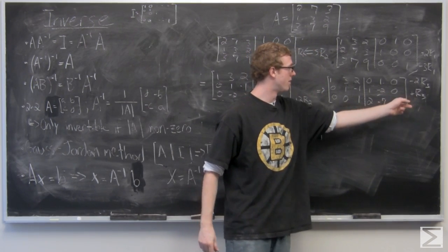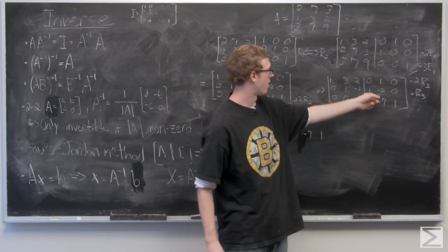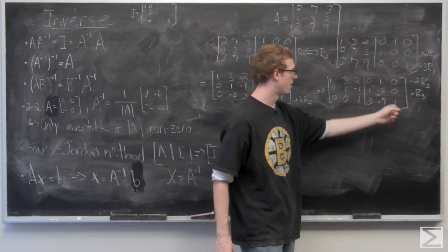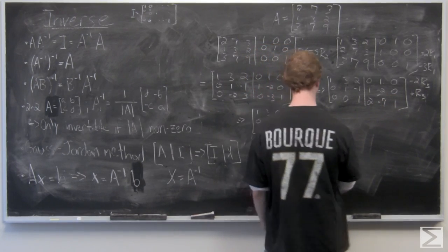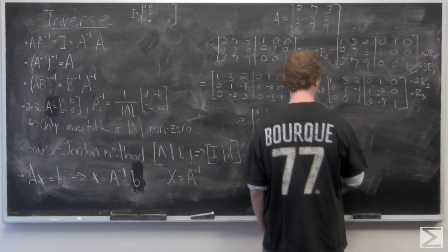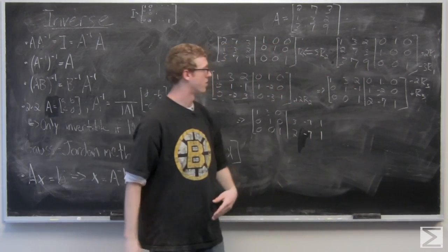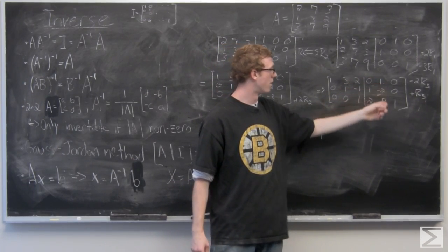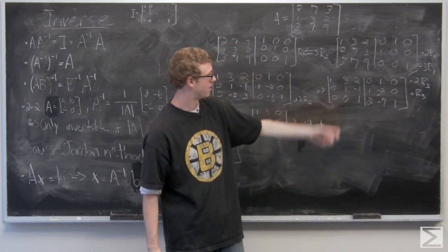So on the second row we have added R3, so we have 1 plus 2, negative 2 plus negative 7, and 0 plus 1. And on the top we're subtracting 2, so 0 minus 4, 1 plus 14, and 0 minus 2.